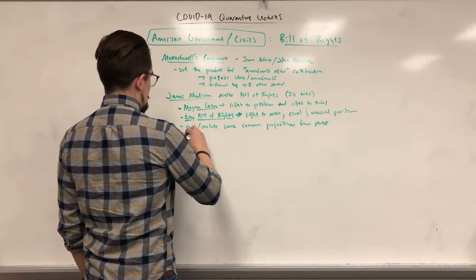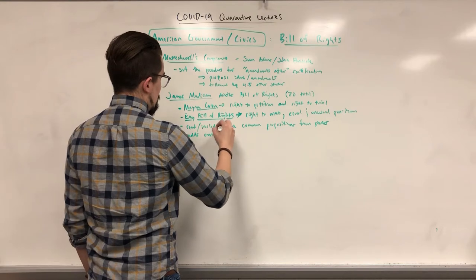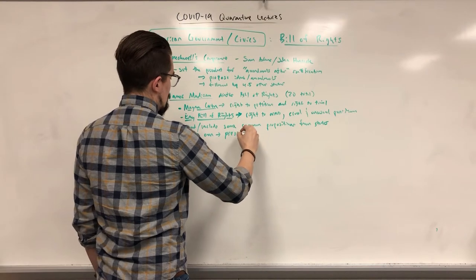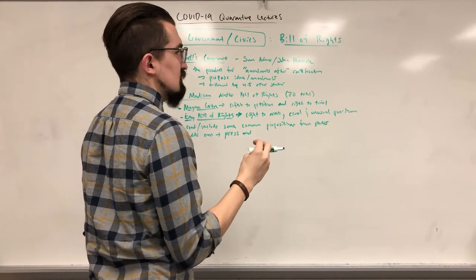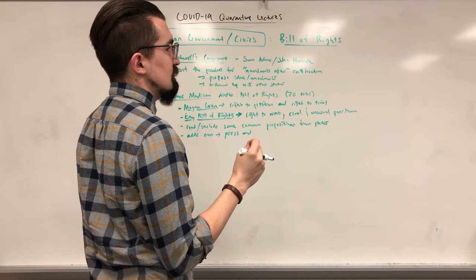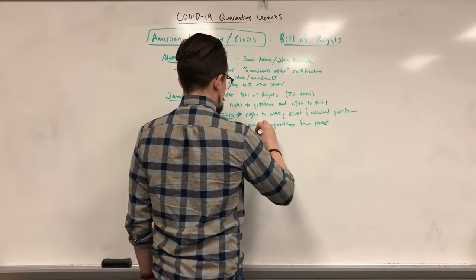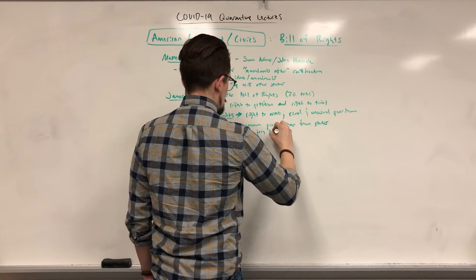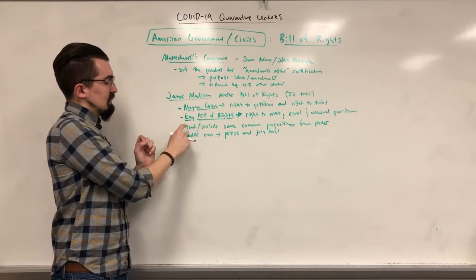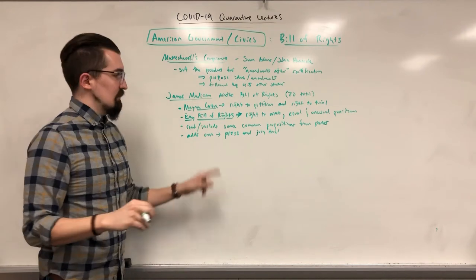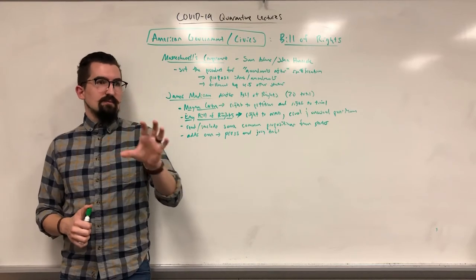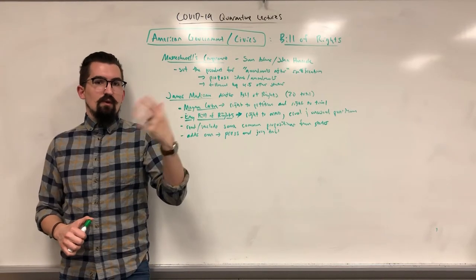Madison also put a couple of his own additions. Off the top of my head, I believe he included Freedom of the Press, and also the right to a trial by jury. So those are the basic sets he pulled from past documents, ideas from other states, and then added a couple of his own, totaling 20.